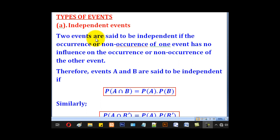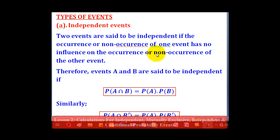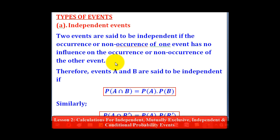Two events are said to be independent if the occurrence or non-occurrence of one event has no influence on the occurrence or non-occurrence of the other event. For example, if I have a die and a coin and I toss the die and also throw the coin,